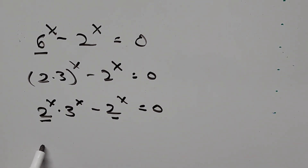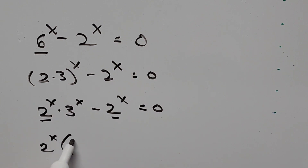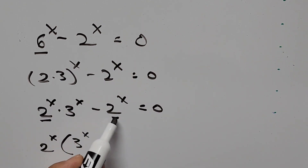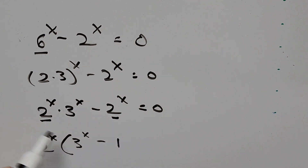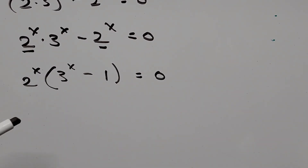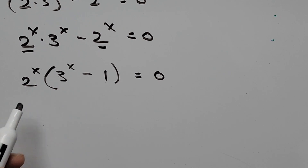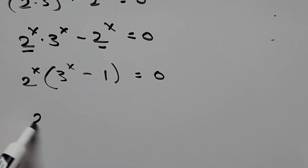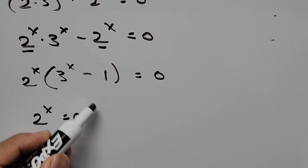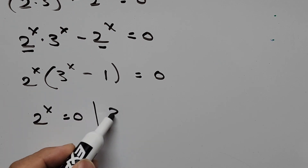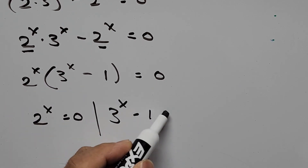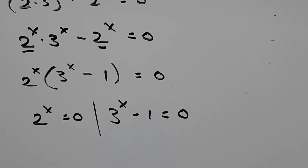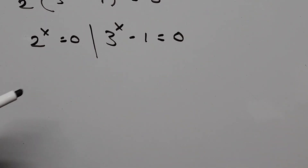So we have 2 to the power of x times 3 to the power of x minus 2 to the power of x equals zero. We can factor out 2 to the power of x, giving us: 2 to the power of x times the quantity (3 to the power of x minus 1) equals zero. From here we equate each factor to zero: 2 to the power of x equals zero, and 3 to the power of x minus 1 equals zero.